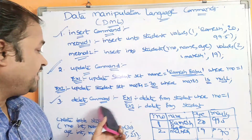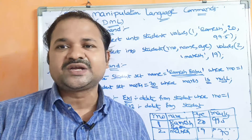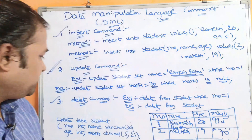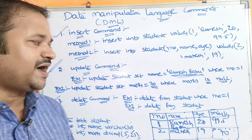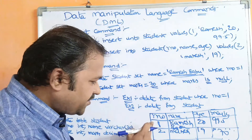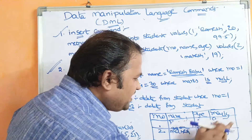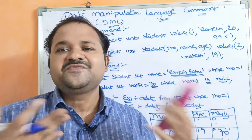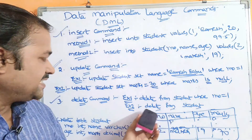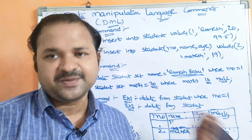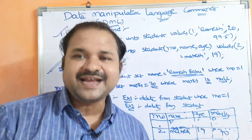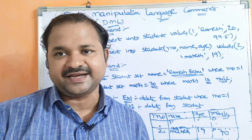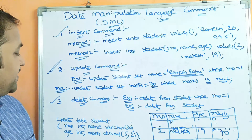This is about UPDATE command. Now let us see the last command — DELETE command. DELETE command is useful in order to delete a row based upon a condition, or we can delete multiple rows, or we can delete all rows from the table. First example: DELETE FROM student WHERE roll_number = 1. If the roll number is 1, then we have to delete that row. If we execute this command, that row will get removed. If we have 3 records where the roll number is 1, then all 3 records will get removed. If we want to delete all rows: DELETE FROM student — then all rows will get deleted. This is about DML commands: INSERT, UPDATE, and DELETE.